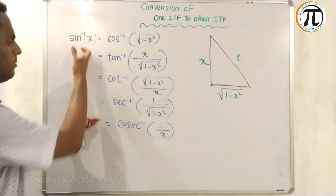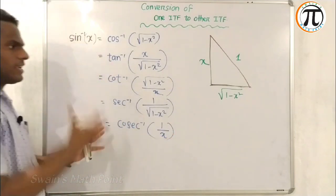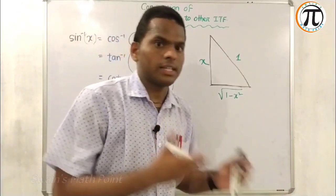If you simply know that sine inverse X is cosecant inverse 1 by X according to property number 4. But this is the trick how to convert one ITF to other ITF.